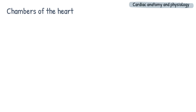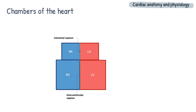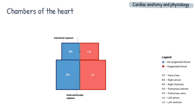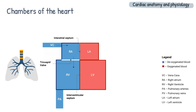The heart is divided into four main chambers, split into the left and right by the septum, and atria from ventricles by the atrioventricular valves. The right atrium receives deoxygenated blood from the body through the vena cava, and pumps it across the tricuspid valve into the right ventricle. The blood is then transported into the lungs for oxygenation across the pulmonary valve via the pulmonary arteries.